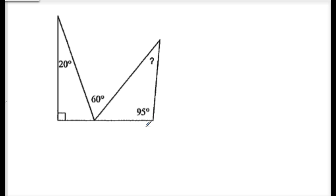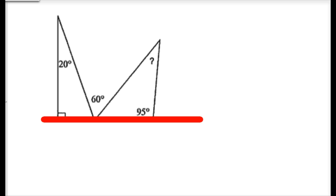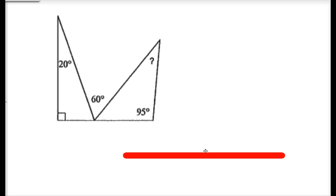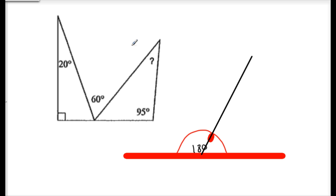Now we have two more triangles here, and a couple of rules we need. The last one used a 90-degree complementary angle. This one — you want to look at this line here. It's a straight line, and straight lines are 180 degrees. If I apply an angle in between, I'm splitting 180 into two angles, but their sum is still 180 degrees.